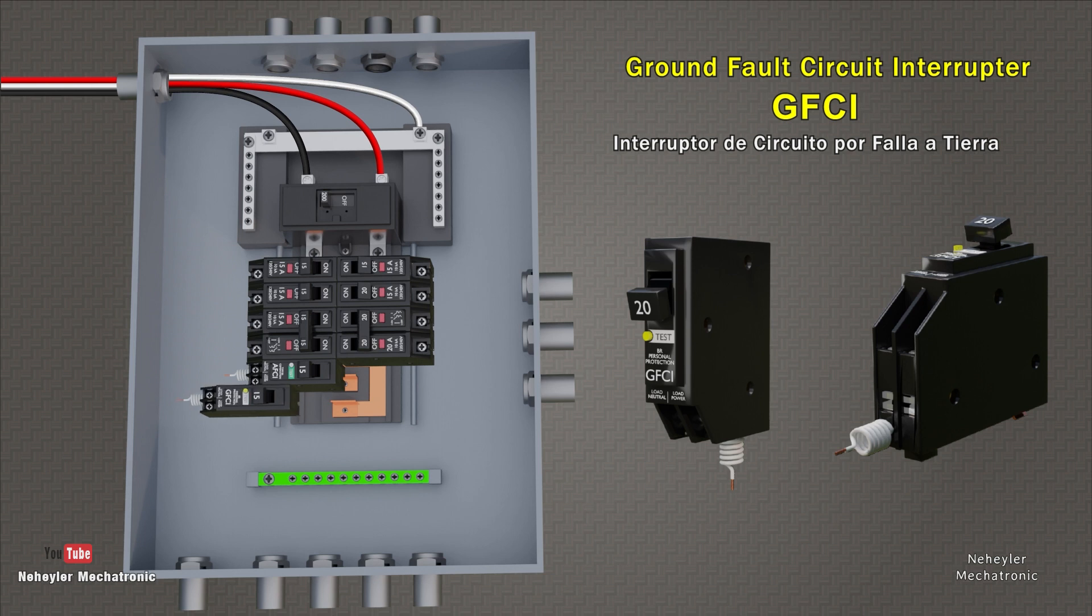Another important element is also the ground fault circuit interrupter. This device is designed to keep people safe from deadly electrical shock. When an electrical current diverted to ground exceeds a certain value, the GFCI switch interrupts the electricity immediately. These elements can be 15, 20 or more amperes in nominal current, and a sensitivity of 10 milliamps or less.